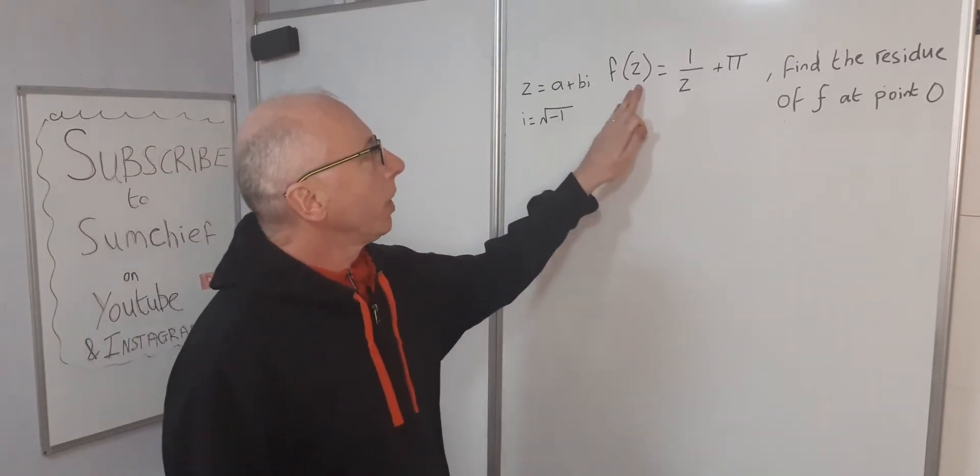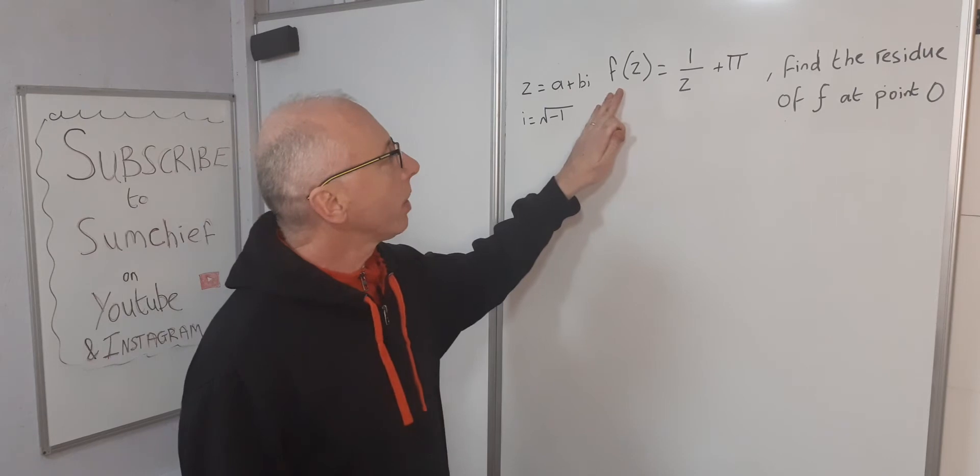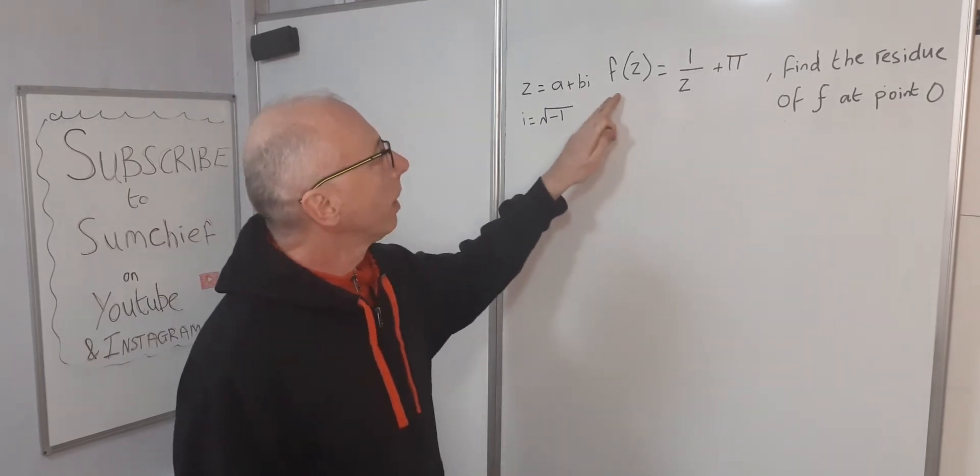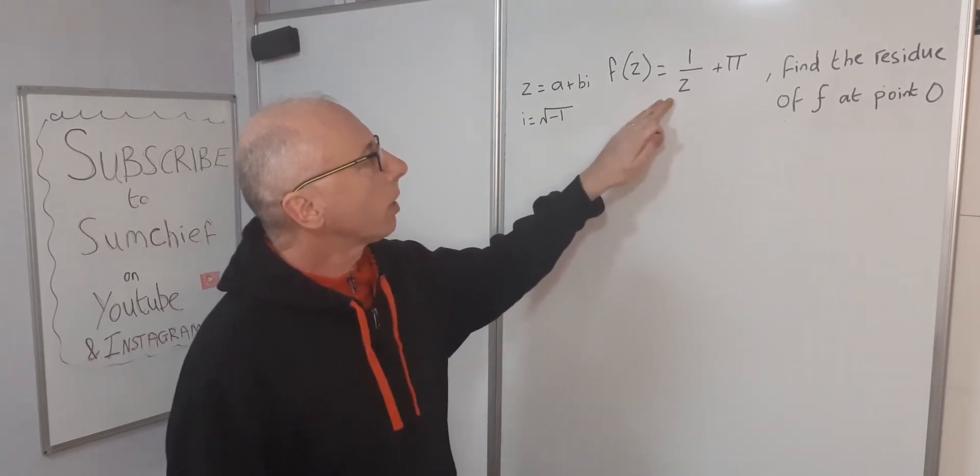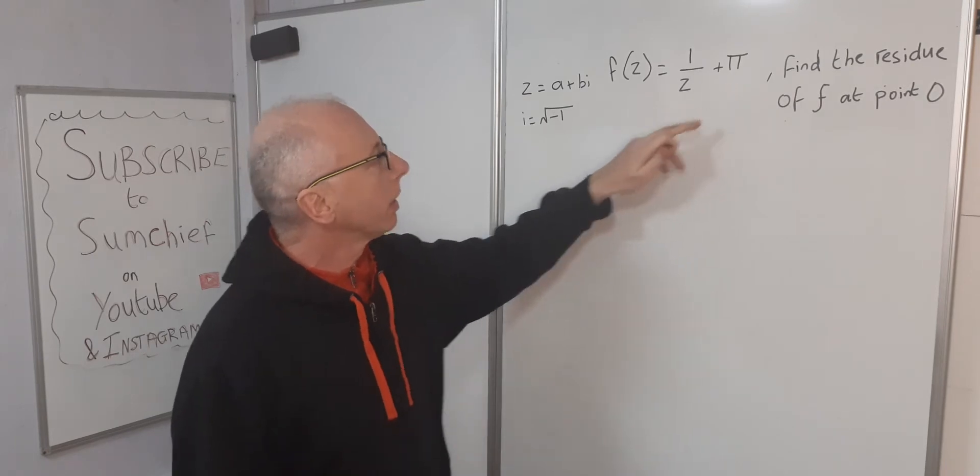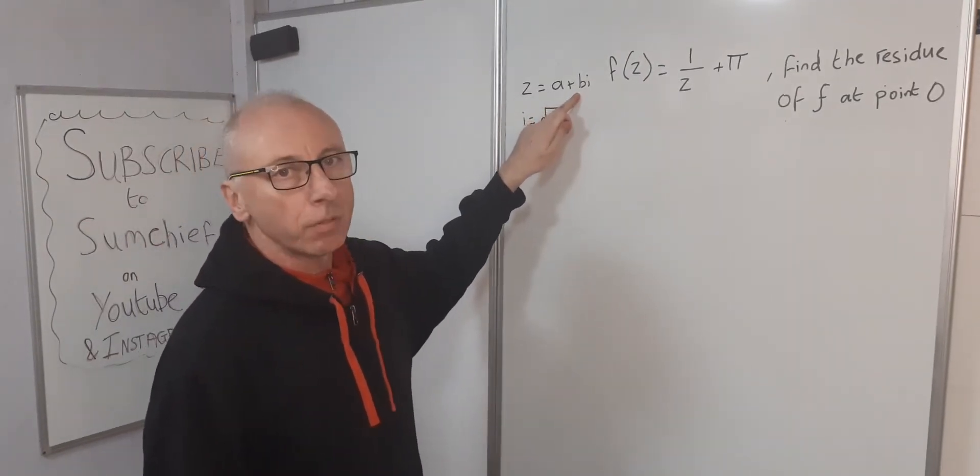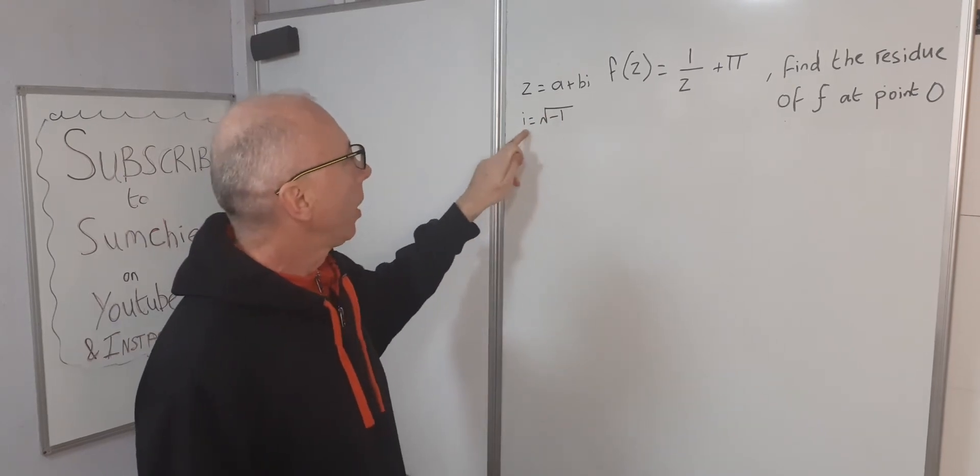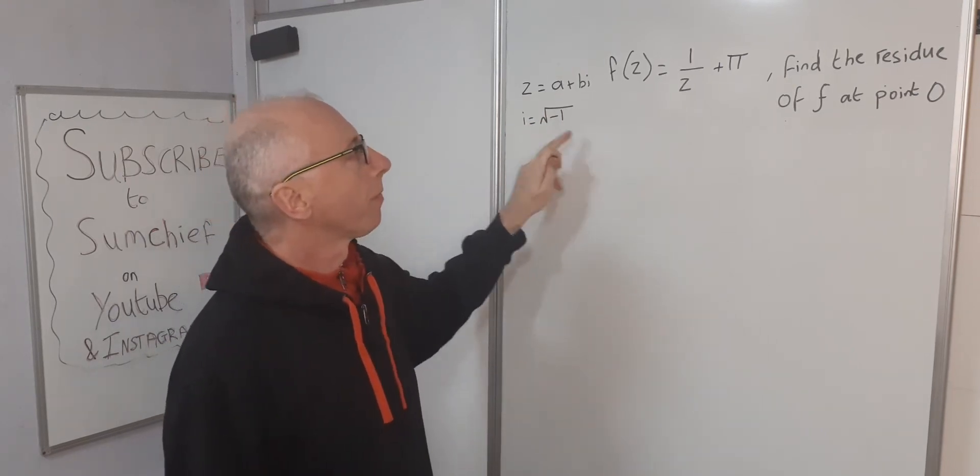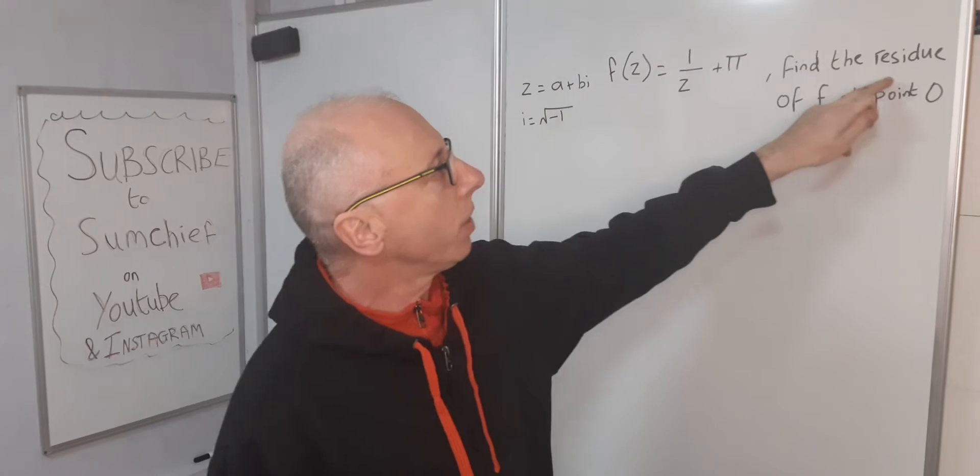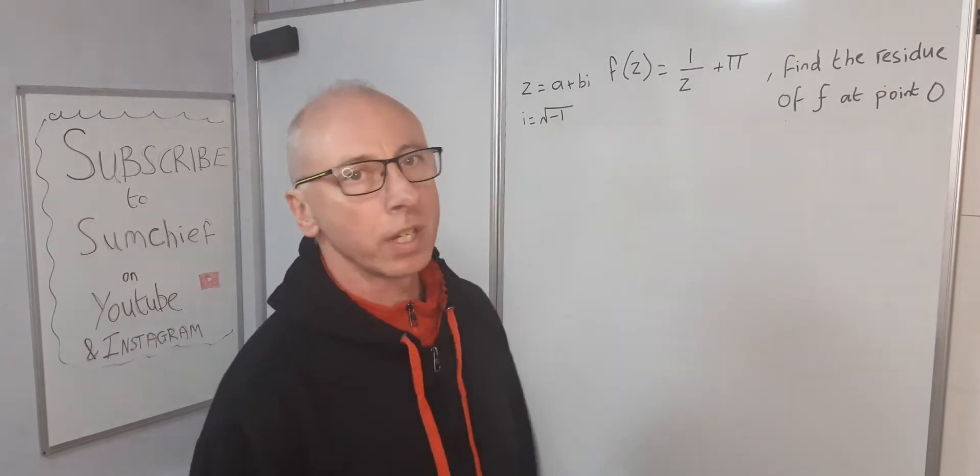In this video we've got a function in the complex world. This is all complex analysis. f(z) equals 1 over z plus pi, where z equals a plus bi, which is the general form of a complex number, and i is the square root of minus one. We've been asked to find the residue of the function f at point zero.